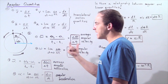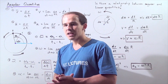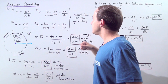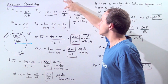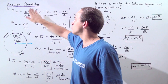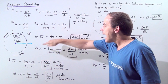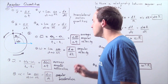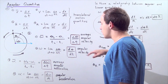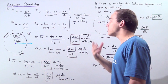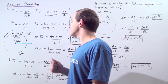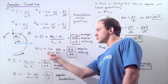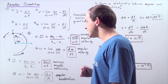In the same way that instantaneous velocity was the derivative of our displacement function with respect to time, our instantaneous angular velocity is the derivative of our angle function theta with respect to time. We are taking the limit of the ratio as our change in time approaches zero.